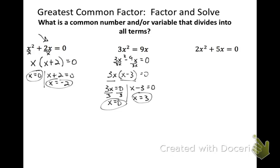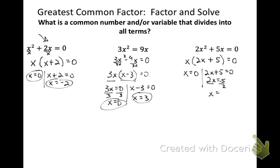2x² plus 5x equals zero. 2 and 5 don't have a common factor except 1, which I don't need to factor out. But they do have a common factor of a single x, so I can factor that out. 2x² divided by x is simply 2x. 5x divided by x is 5. So now I have factored, and then to solve, I set each expression equal to zero. I'll subtract my 5 and divide by 2. Factoring out a greatest common factor means looking for a common number and/or variables that divide into all terms and pulling it out to the front — it's like reverse distributing. Then solving is using the zero product property to finish the problem.